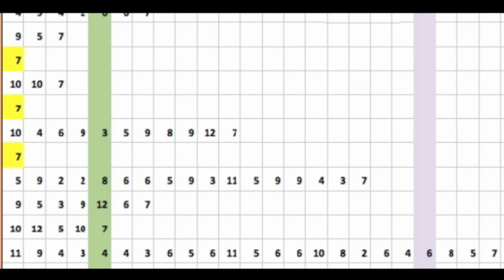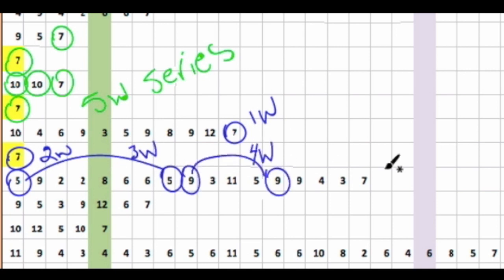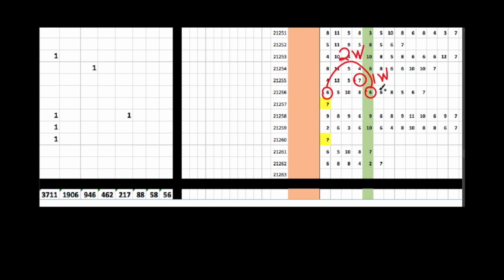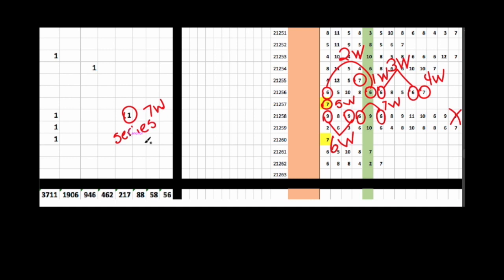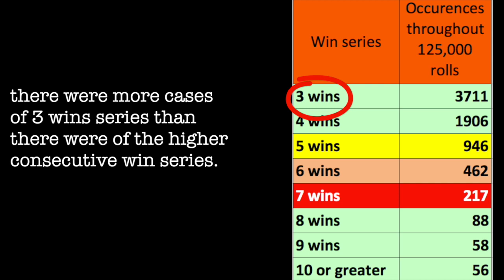Now a win series is a connected event. Well, after analyzing all my rolls data and sorting the wins, there were more cases of three wins than there were of the higher consecutive win series.